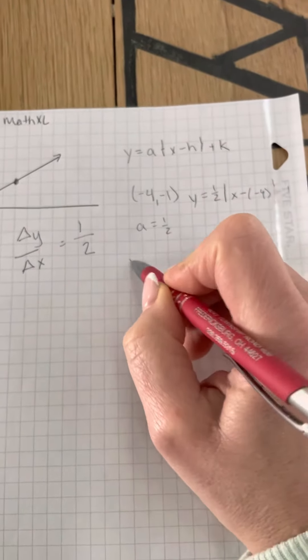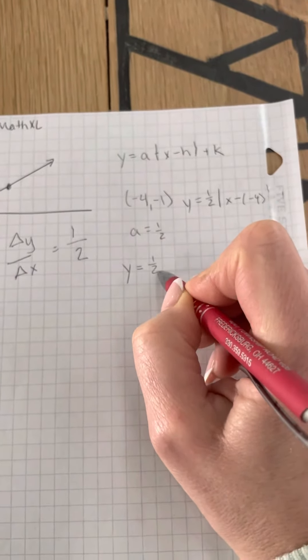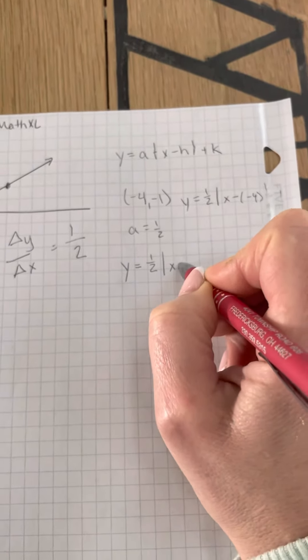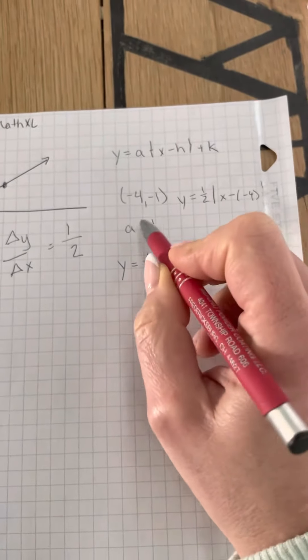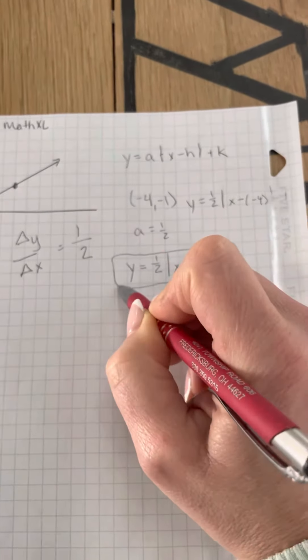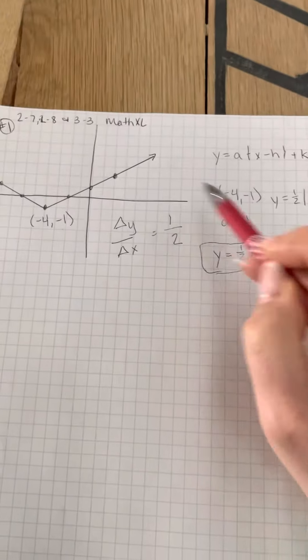So let me rewrite that. So I have Y equals one half, X minus negative four, which is actually plus four, and then minus one. So that would be your correct equation to put in for your answer.